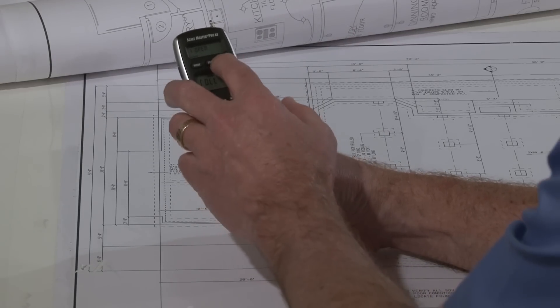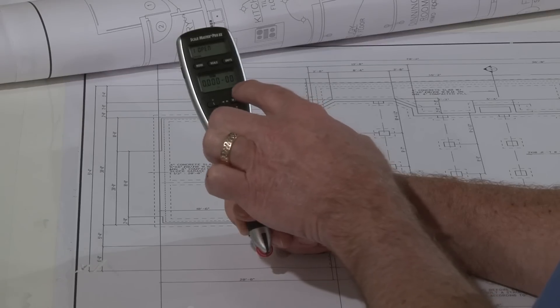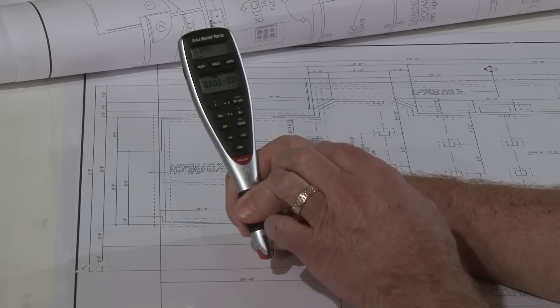Then I hit scale again, and it starts flashing the feet and inches. It's asking whether that was a feet and inch value or if you'd like to put in some other kind of units. Feet and inches is fine.